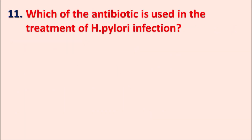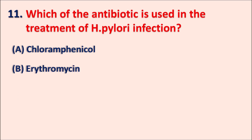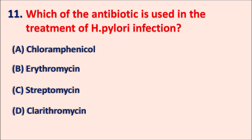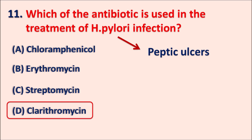Question eleven: which antibiotic is used in the treatment of H. pylori infection? Options are: A) chloramphenicol, B) erythromycin, C) streptomycin, D) clarithromycin. H. pylori (Helicobacter pylori) infection can produce peptic ulcers. To treat these peptic ulcers we can use antibiotics along with proton pump inhibitors. The right answer is clarithromycin.